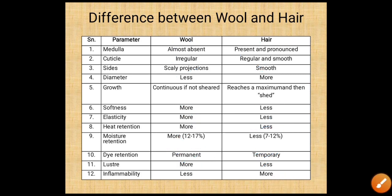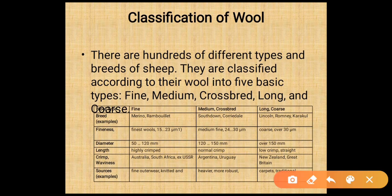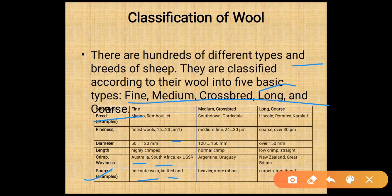Classification of wool: there are hundreds of breeds of sheep classified according to their wool into five basic types — fine, medium, crossbreed, long, and coarse. Fine wool breeds include merino and rambouillet. Fineness of fine wool is about 15 to 23 micrometers, diameter is 50 to 120 mm, and it is highly crimped. Sources include Australia, South Africa, and USSR.